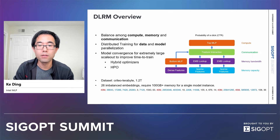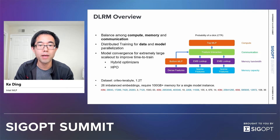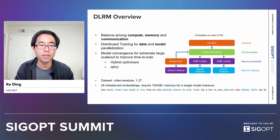Each block has its own characteristics, color-coded for memory, communication, and compute-bounded. The dataset used for DLM training is the 1.2 terabyte critical dataset. Model size is huge because of the sparse layers. In total, if running it on a single instance, the required memory will be more than 100 gigabytes.